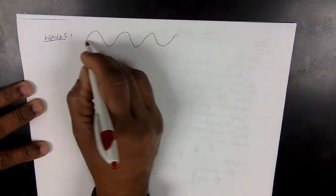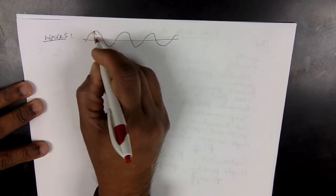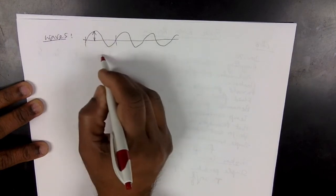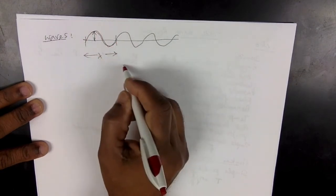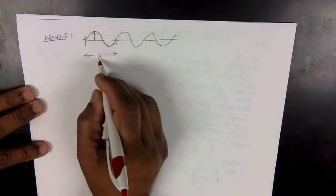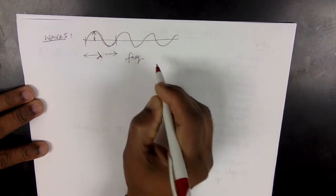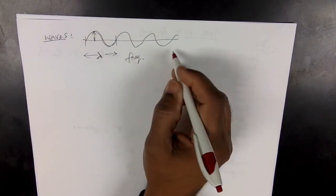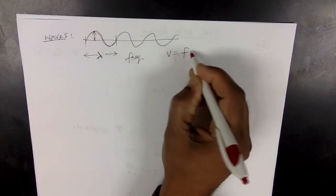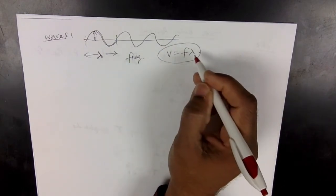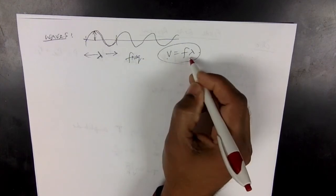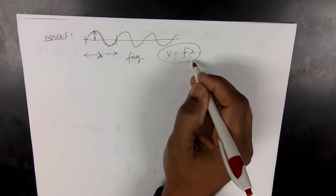In waves, you have a bunch of things to learn. When you look at a wave, you have amplitude — know its definition. Know the definition of wavelength, which is how far the wave travels in one time period. Know the definitions of wavelength, amplitude, frequency, and wave velocity, and the equation for the whole thing: V equals Fλ. V is in meters per second, F is in Hertz, and λ should be in meters.